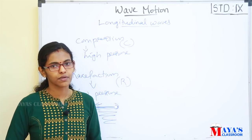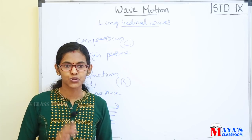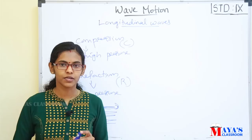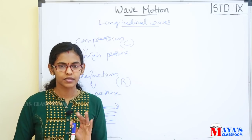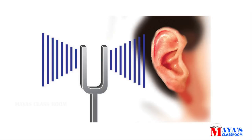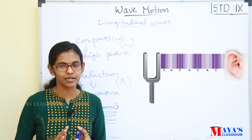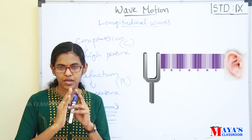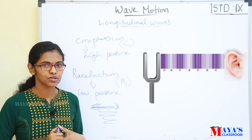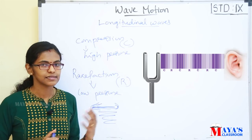Now we are going to examine longitudinal waves. Sound waves are longitudinal. We call it a tuning fork — a tuning fork tap produces a sound. The sound vibrates as a longitudinal wave. It is a vibration producing a high pressure area and a low pressure area. We call the tuning fork vibration a longitudinal wave, and we call it sound.